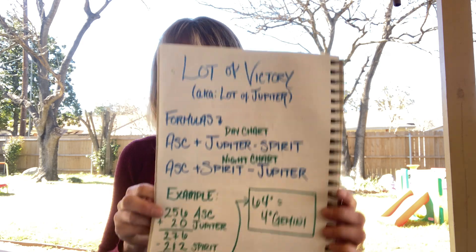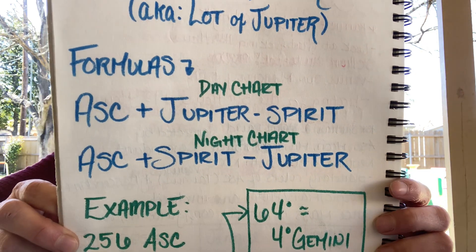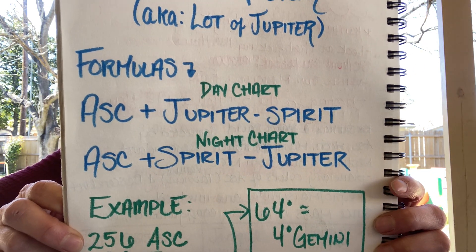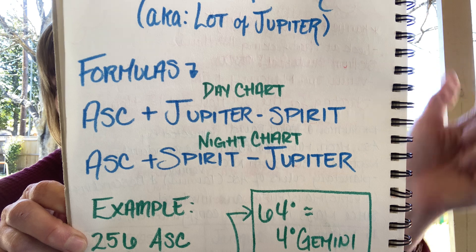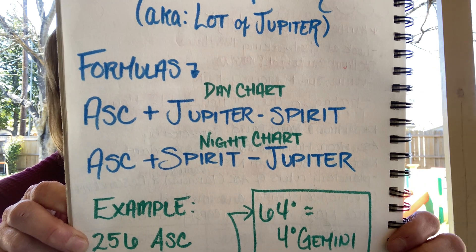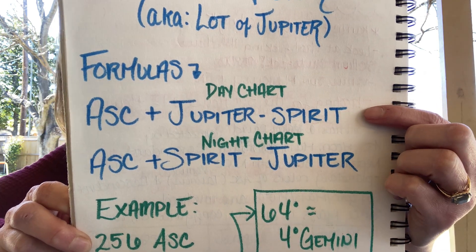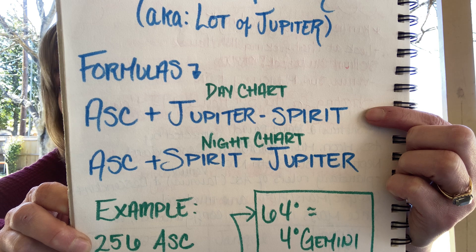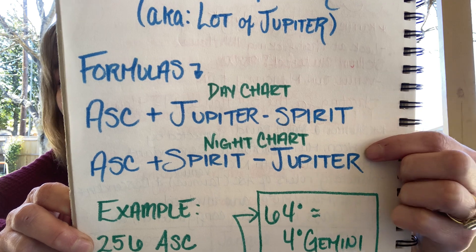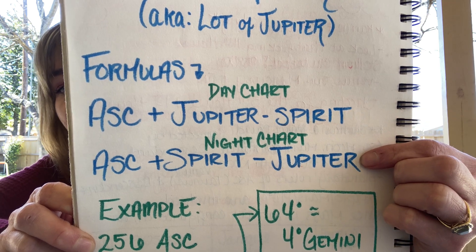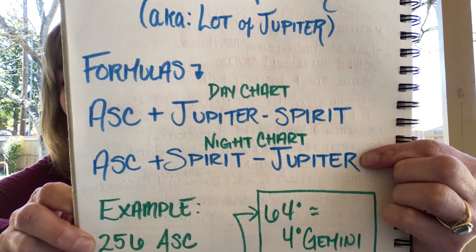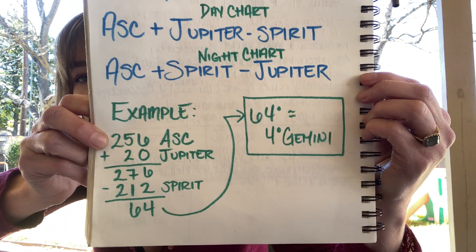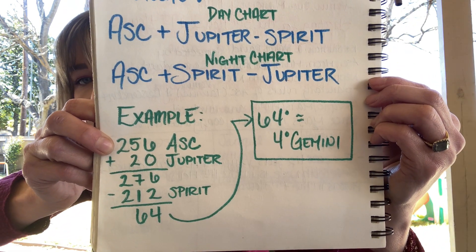It's one of the seven hermetic lots based on the planets. These are the formulas for it. If you have a day chart — when you have the sun above the ascendant — you will use the top formula. If you have the sun below the ascendant, you have a night chart and will use the bottom formula. And then I have an example on how to calculate it.